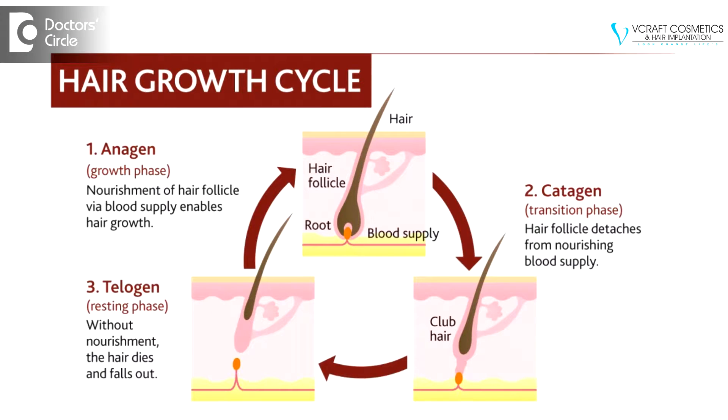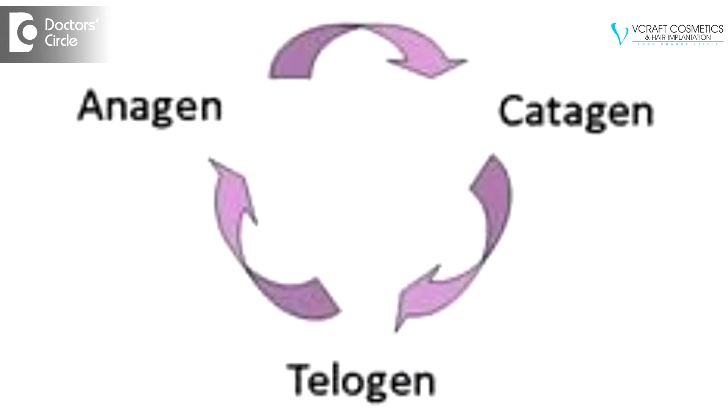That active stage of growth is referred to as the anagen cycle. An anagen cycle can be somewhere between three to seven years, which is an active hair growth period. The second hair cycle is known as the catagen cycle. In the catagen cycle, there is no active hair growth — the hair is stagnant — and this lasts for a very short period of about two to three weeks.